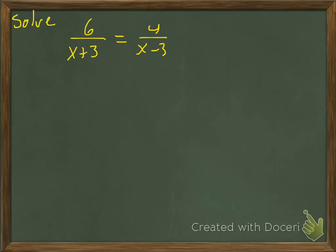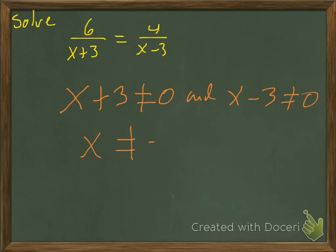But the first thing I'm going to do is note my restrictions, because we don't like to divide by zero. So x+3 couldn't be zero, and x-3 can't be zero. That gives me two restrictions: x can't be -3 and x can't be positive 3. So I'm going to go ahead and note those restrictions.